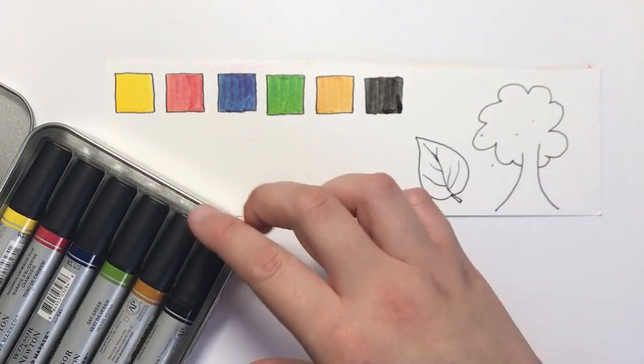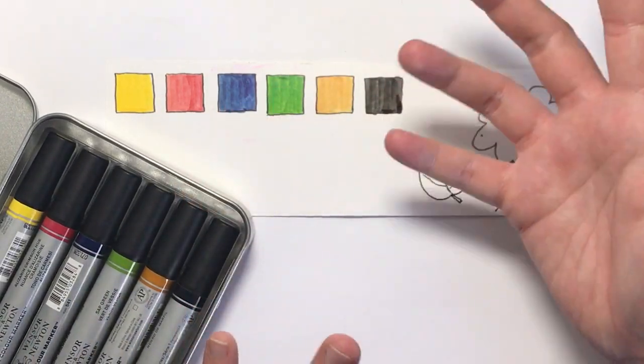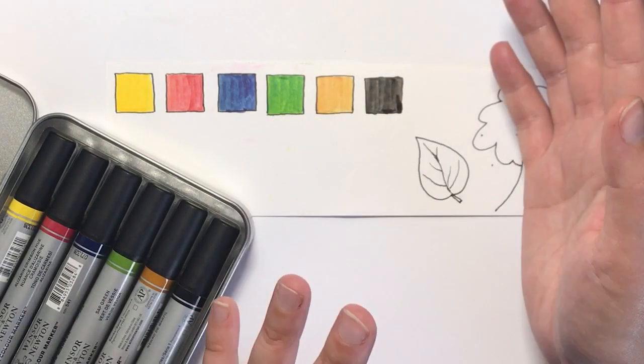They're available to buy in a six pack like this, a 12 pack, and also individually. So if you run out of one colour, you can go and pick up another without having to buy a whole new set.